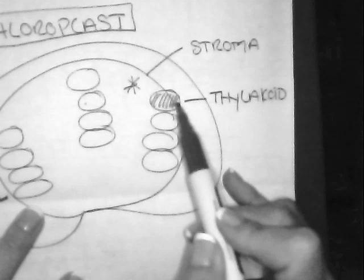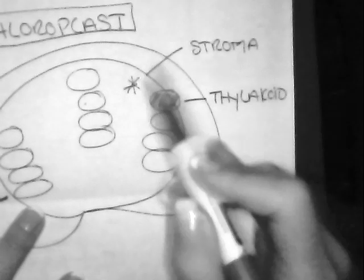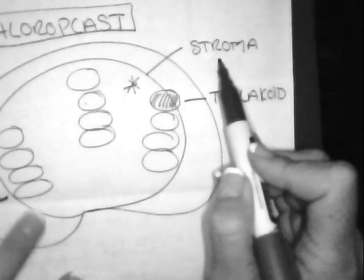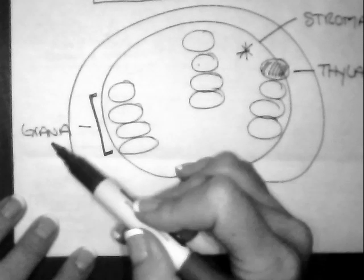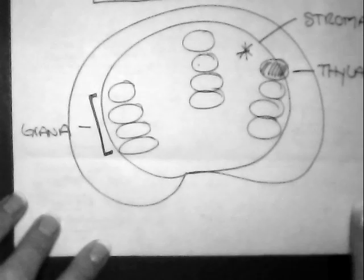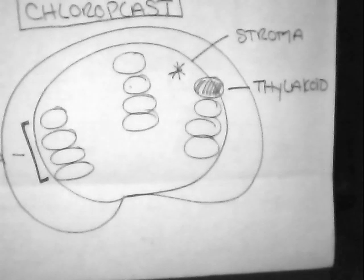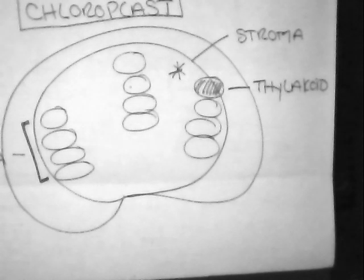Remember, your single discs are known as your thylakoid, the empty spots are known as your stroma, and then of course your stacks of thylakoids over here on the side is known as your grana. Now, with photosynthesis, we actually have two parts that we're going to talk about.